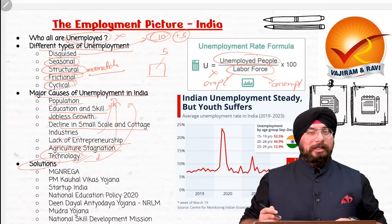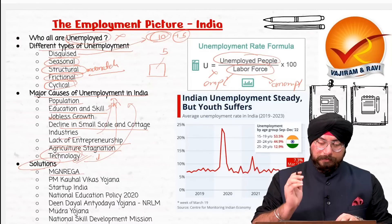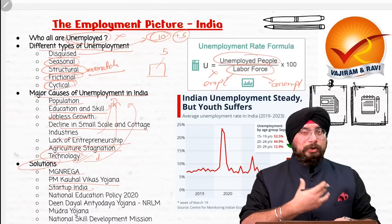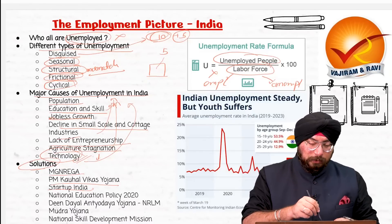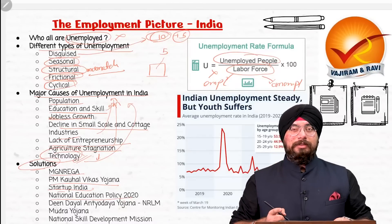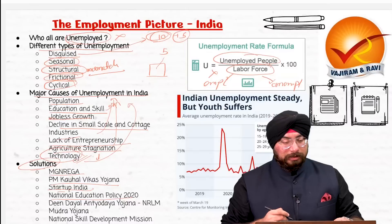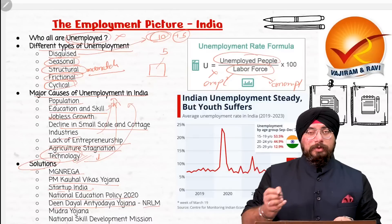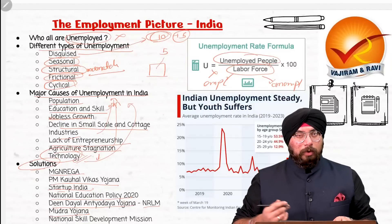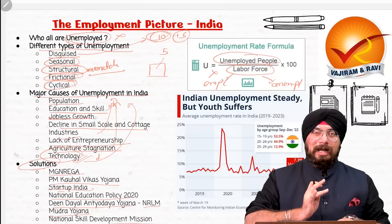What are the various solutions and measures taken by the government? One is MGNREGA, which provides rural households with 100 days of employment in a year. Then PM Kaushal Vikas Yojana for skill development. Then Startup India, which promotes Indians to develop startups and enterprises. The National Education Policy of 2020 aims to transform our education system to provide skills to children and make them employment providers, not employment seekers. Then Deen Dayal Antyodaya Yojana — National Rural Livelihood Mission — also promotes employment. Then Mudra Yojana provides loans to people wanting to start small enterprises. The National Skill Development Mission is for upskilling and skill development.